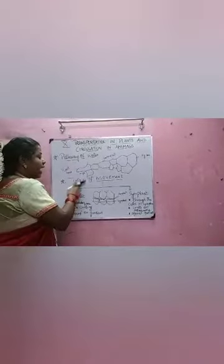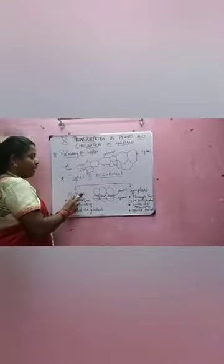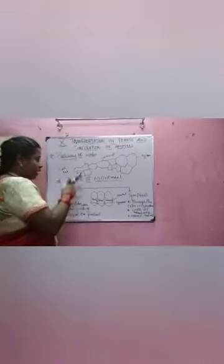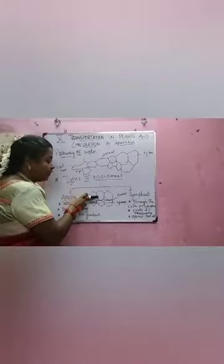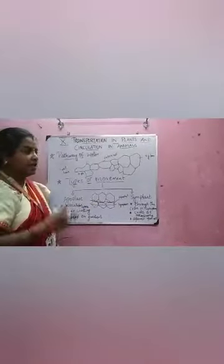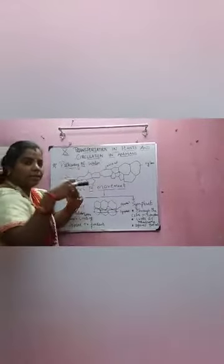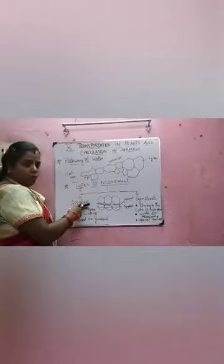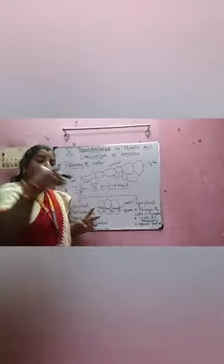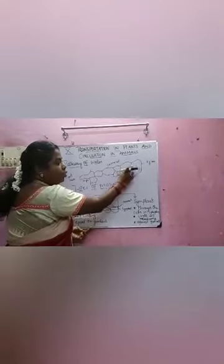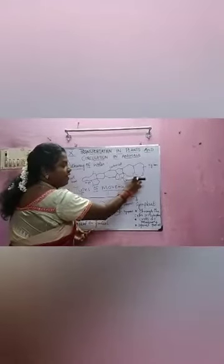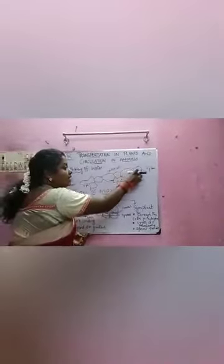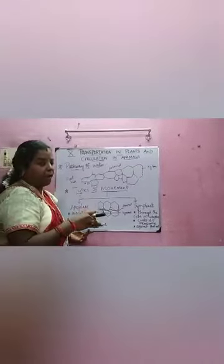Then we move on to the types of movement. We have two different types of movement: one is the apoplast movement, and the other is the symplast movement. Apoplast movement means water is conducted through the intercellular space — the space between two cells. If the movement takes place through that intercellular space, it is called apoplast movement. If the movement takes place within the cell — crossing through the cytoplasm and cell organelles — it is called symplast movement.